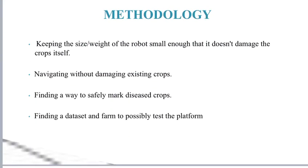Methodology: Keeping the size and weight of the robot small enough that it doesn't damage the crops itself. Navigating without damaging crops. Finding a way to safely mark diseased crops. Finding a dataset and farm to possibly test the platform.